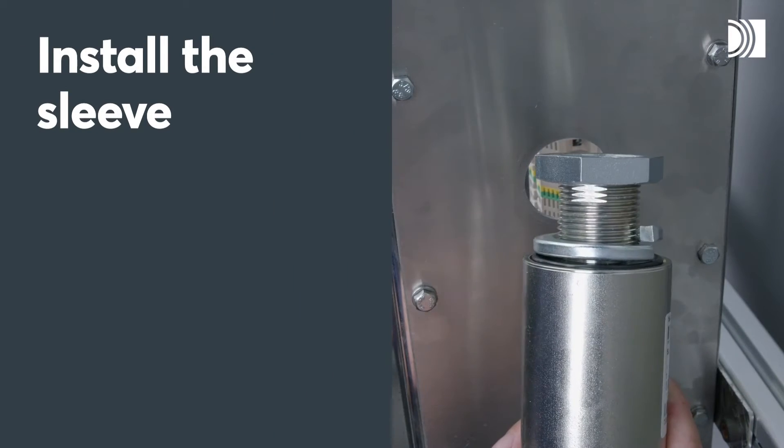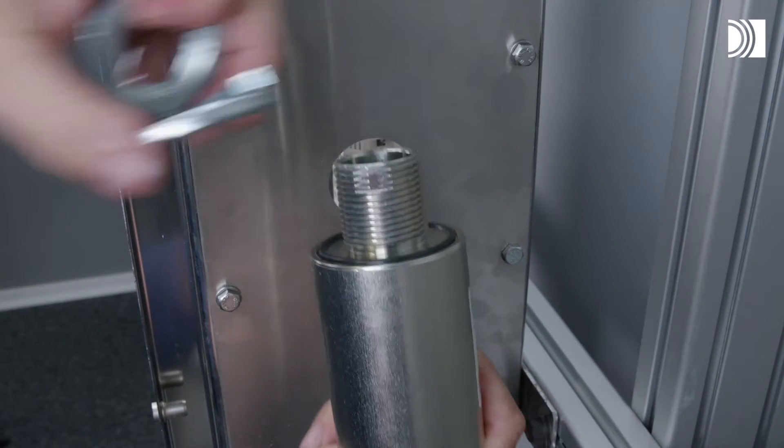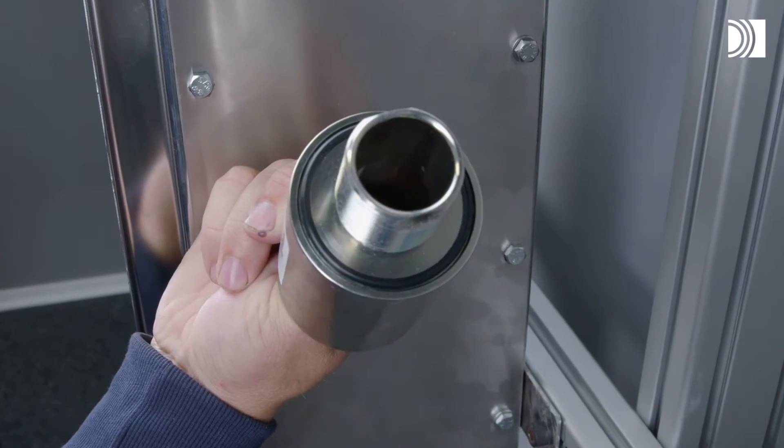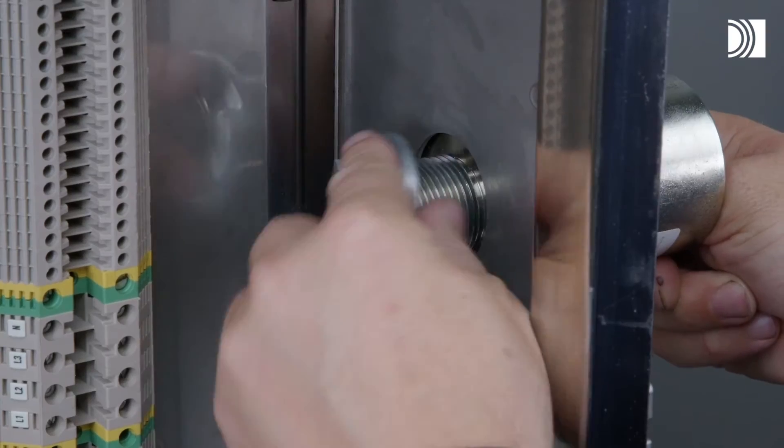Install the sleeve. Make an aperture. Make sure that the O-ring sits securely in the groove. Insert the SLA sleeve into the aperture.